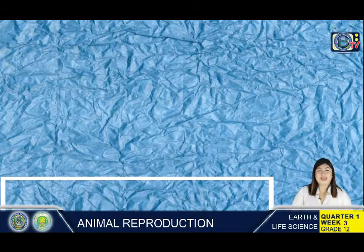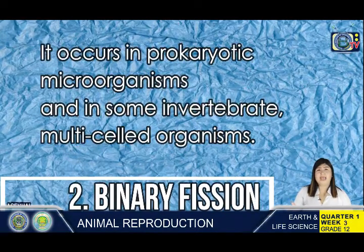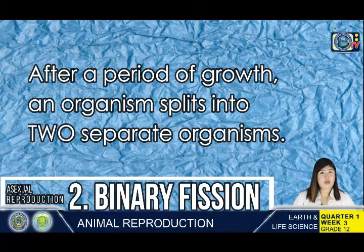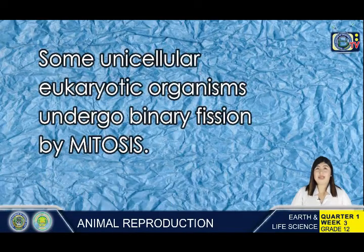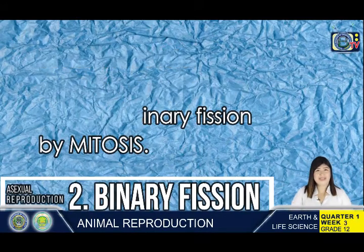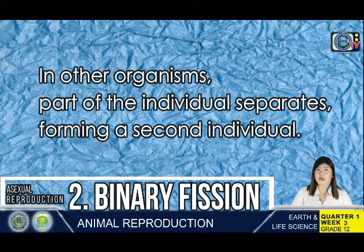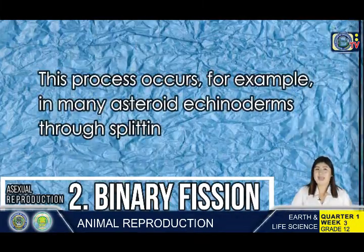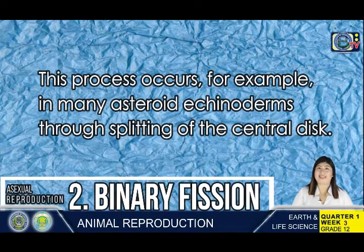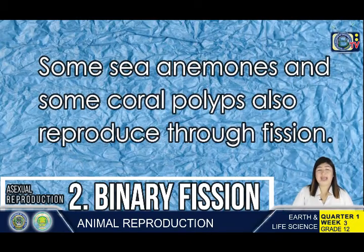Binary fission occurs in prokaryotic microorganisms and in some invertebrate and multicellular organisms. After a period of growth, an organism splits into two separate organisms. Some unicellular eukaryotic organisms undergo binary fission by mitosis. In other organisms, part of the individual separates to form a second individual. This process occurs, for example, in many asteroid echinoderms through splitting of the central disk. Some sea animals and some coral polyps also reproduce through fission.